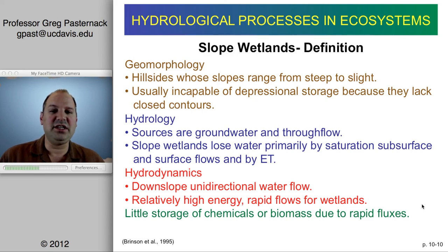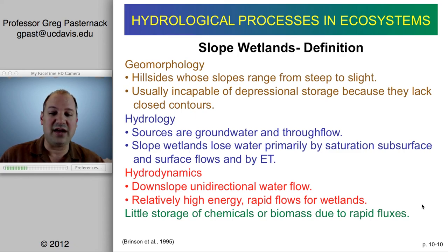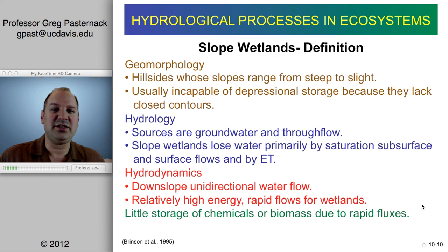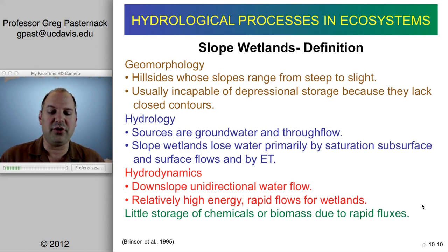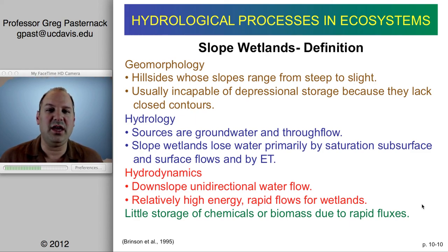Since these are on a slope, there generally isn't a lot of time for evaporation or transpiration. It's a flow-through system — as water enters from groundwater, so too it's probably leaving. The steep slope governs both high groundwater flow and high overland flow rates if both are occurring. Hydrodynamics are directed downslope — unidirectional flow — so slope wetlands have comparatively thin accumulations of inorganic and organic sediment because high slope creates high sediment transport capacity.